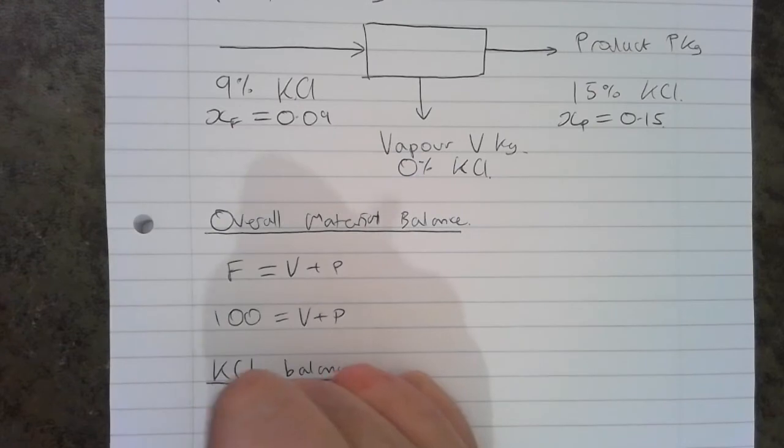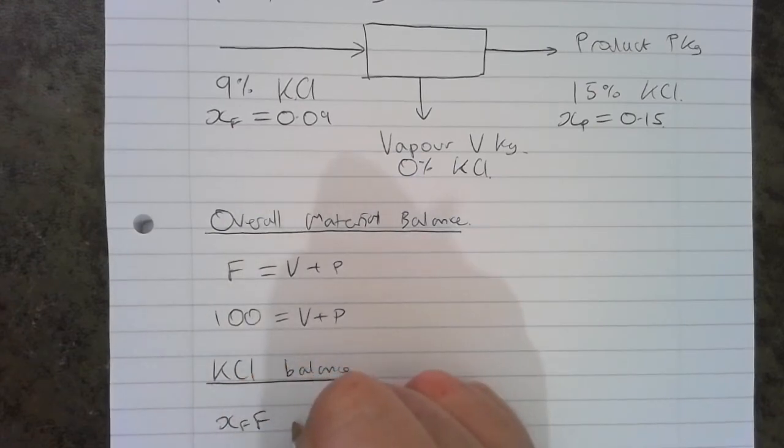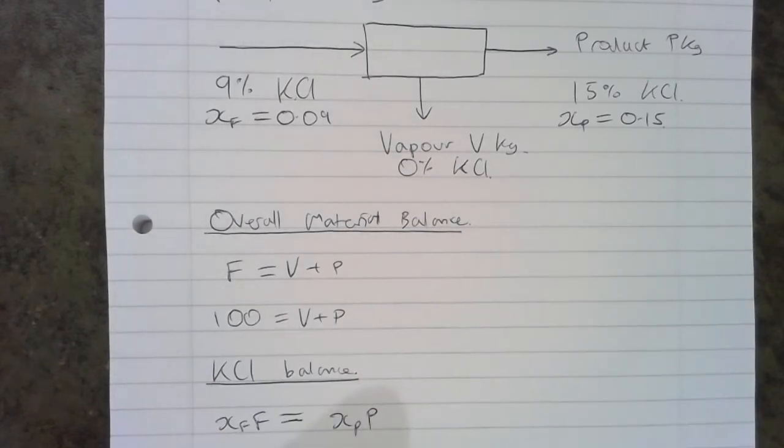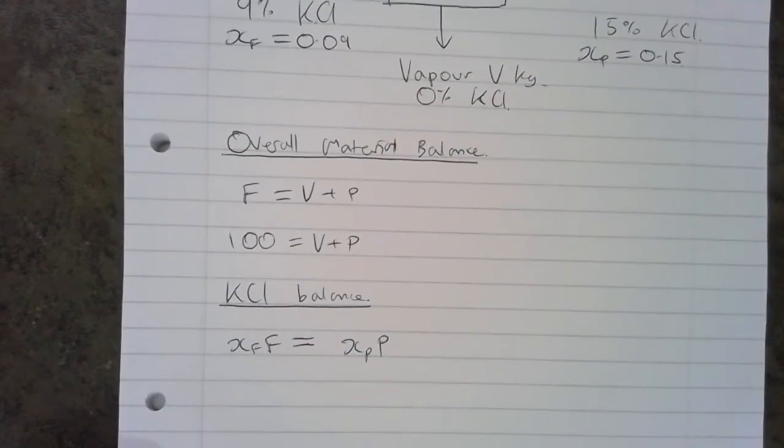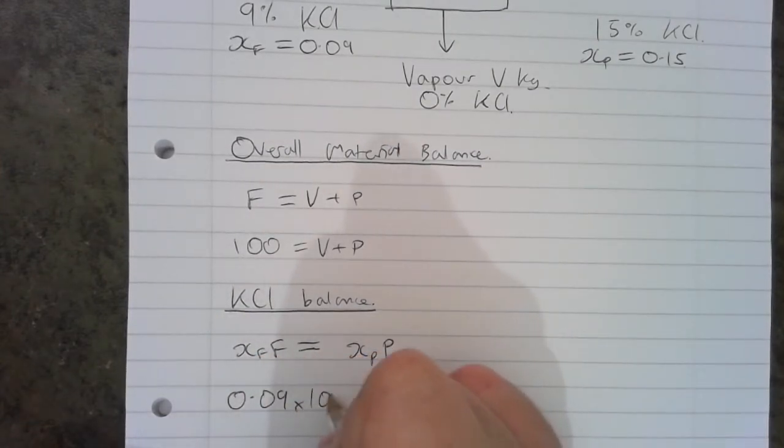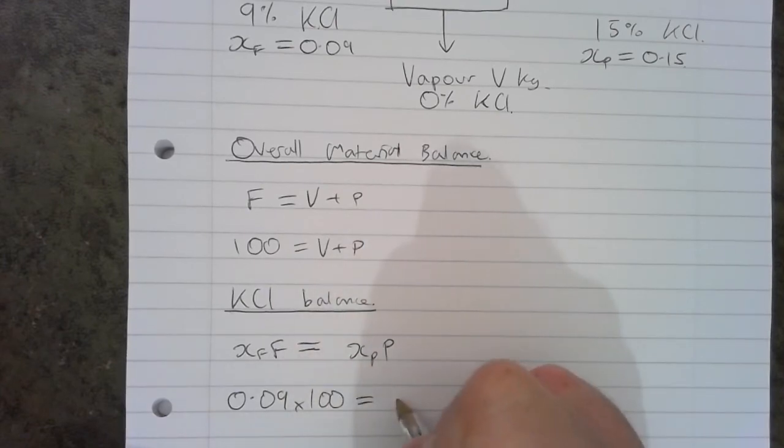So going in, we have XF times F equals—now there's none going out in the vapour, so we just have KCl going out in the product. So it's XP times P. And we can write in values for some of those. So it's 0.09 times 100 going in equals 0.15 P.